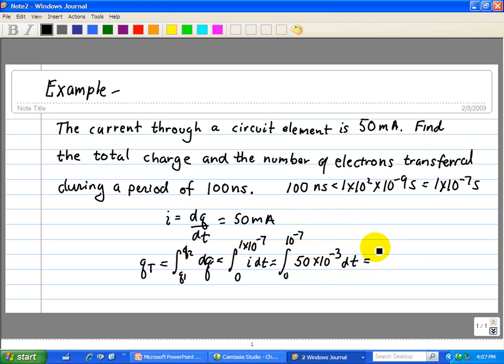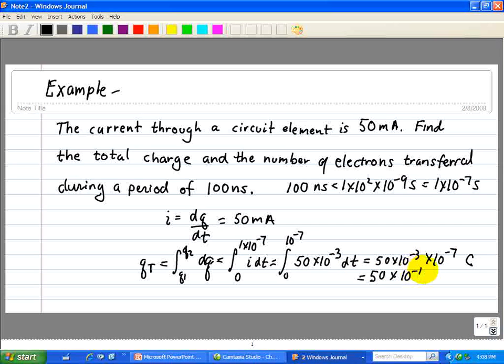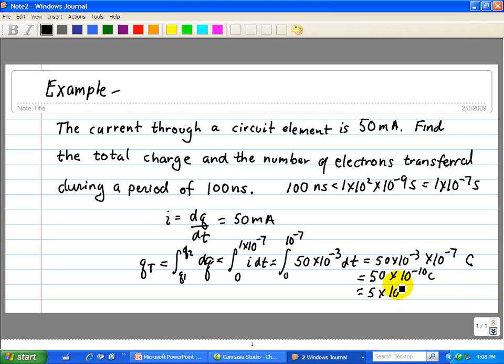And that's equal to 50 times 10 to the minus 3 times 10 to the minus 7 coulombs. And this is equal to 50 times 10 to the minus 10 coulombs. And we can convert that into nanocoulombs as 5 times 10 to the minus 9 coulombs, which is equal to 5 nanocoulombs. That's the answer for this problem.